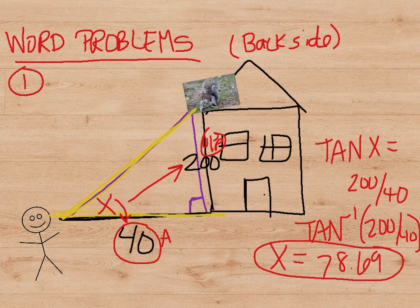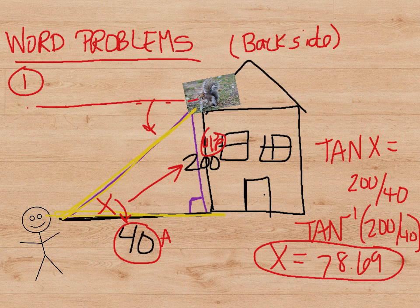At the same time, if the rabid squirrel were looking straight ahead, he would also have to look 78.69 degrees down in order to see you. They're the same.